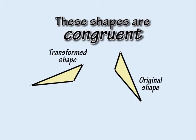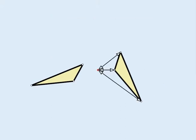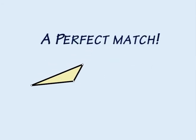To put it another way, if two shapes are congruent, it means we can transform one into the other by rotation, reflection and translation.